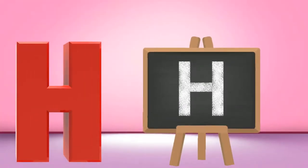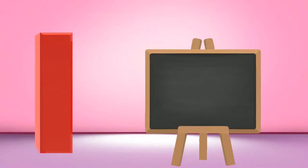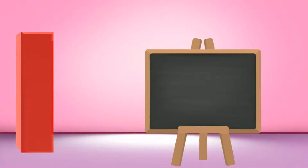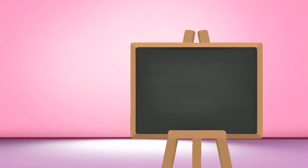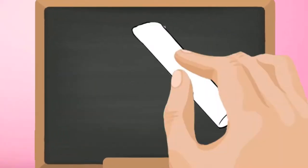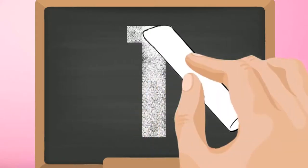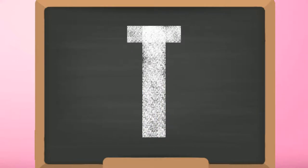I, capital I. Start from the top and make one standing line down. Then make two small lines, one at the top and another at the bottom.